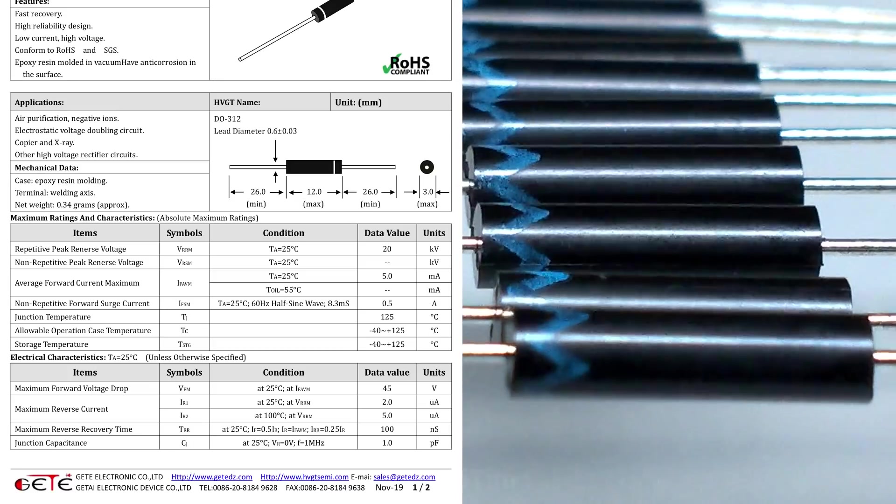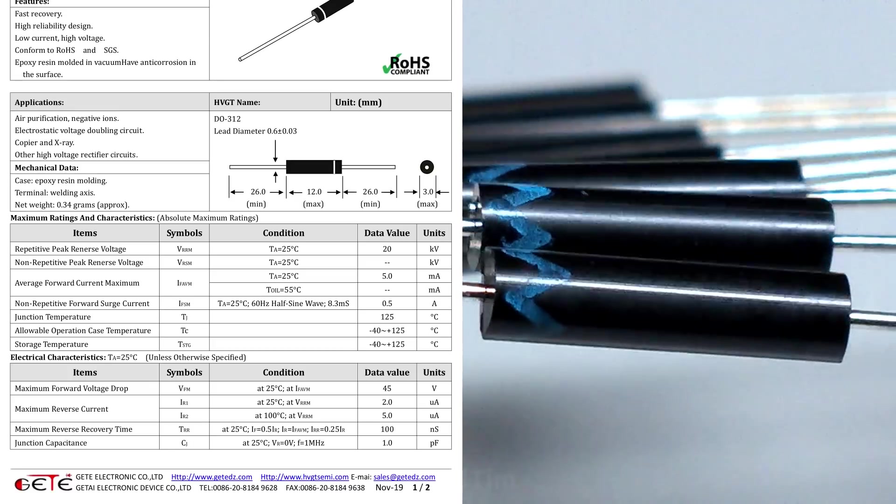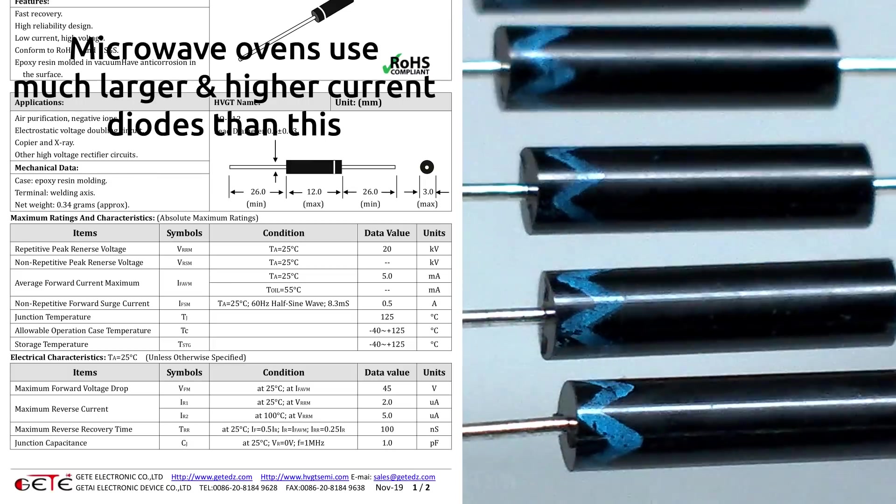But you can often see these in low power, reasonably low voltage x-ray machines, that being 20kV of course, and of course other high voltage rectifier circuits.